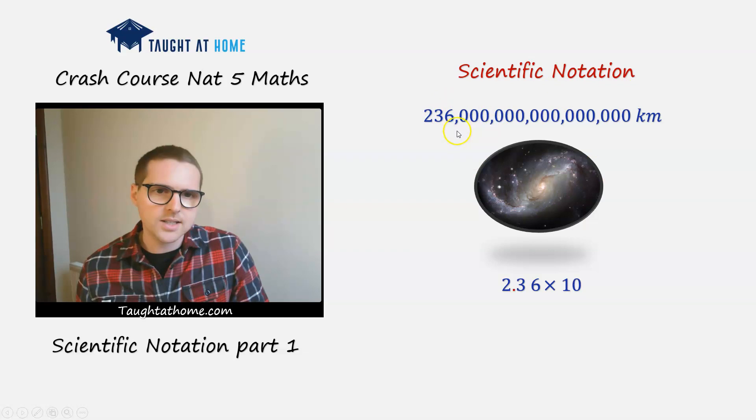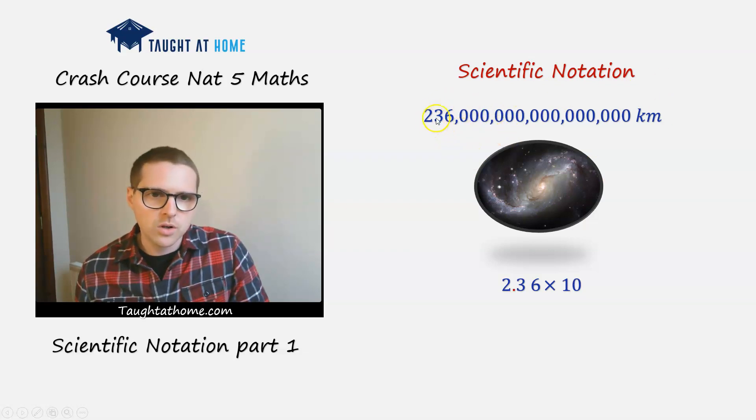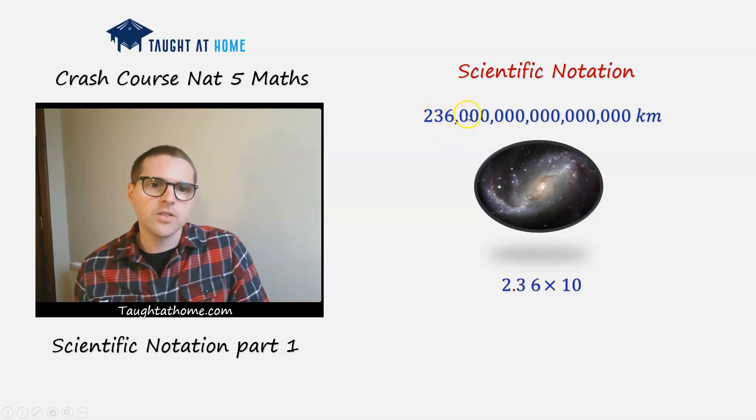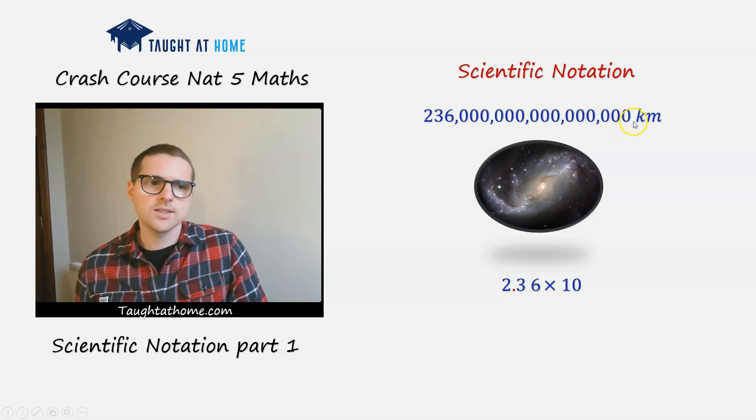So we have to count how many decimal places we move it. So we've got 2, then we've got another 3, 5, then we've got another 3, 8, then we've got another 3, 11, we've got another 3, 14, then we've got another 3, 17. So we have to multiply it by 10, 17 times. And that's where that comes into it. So it's 10 to the power of 17.